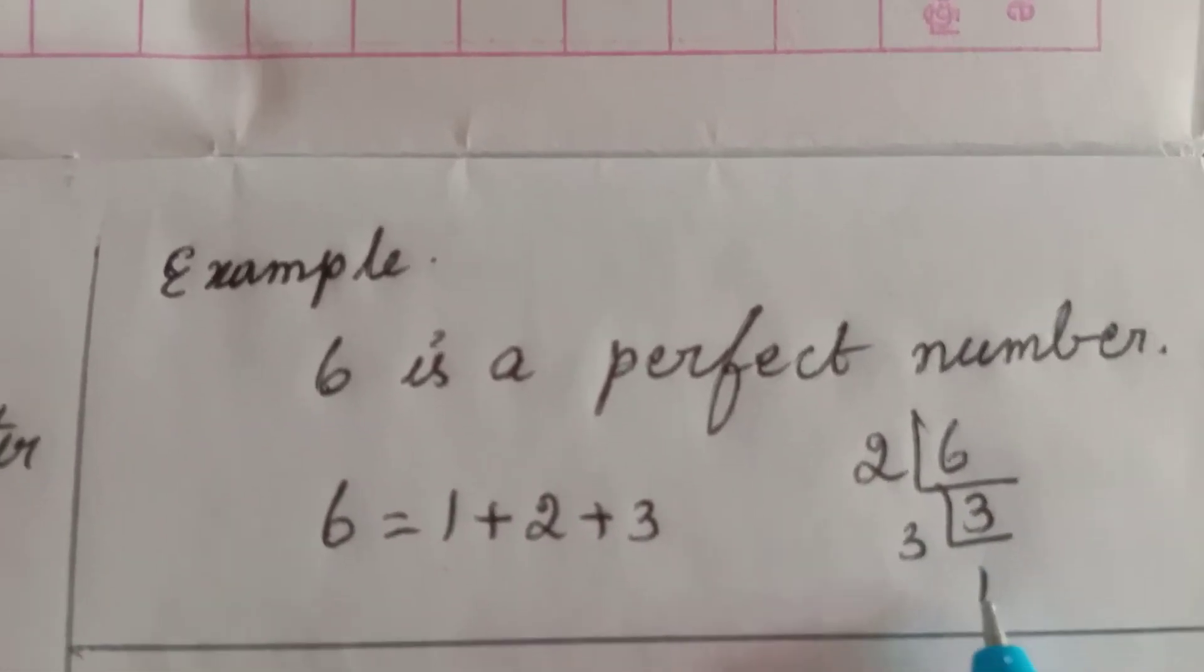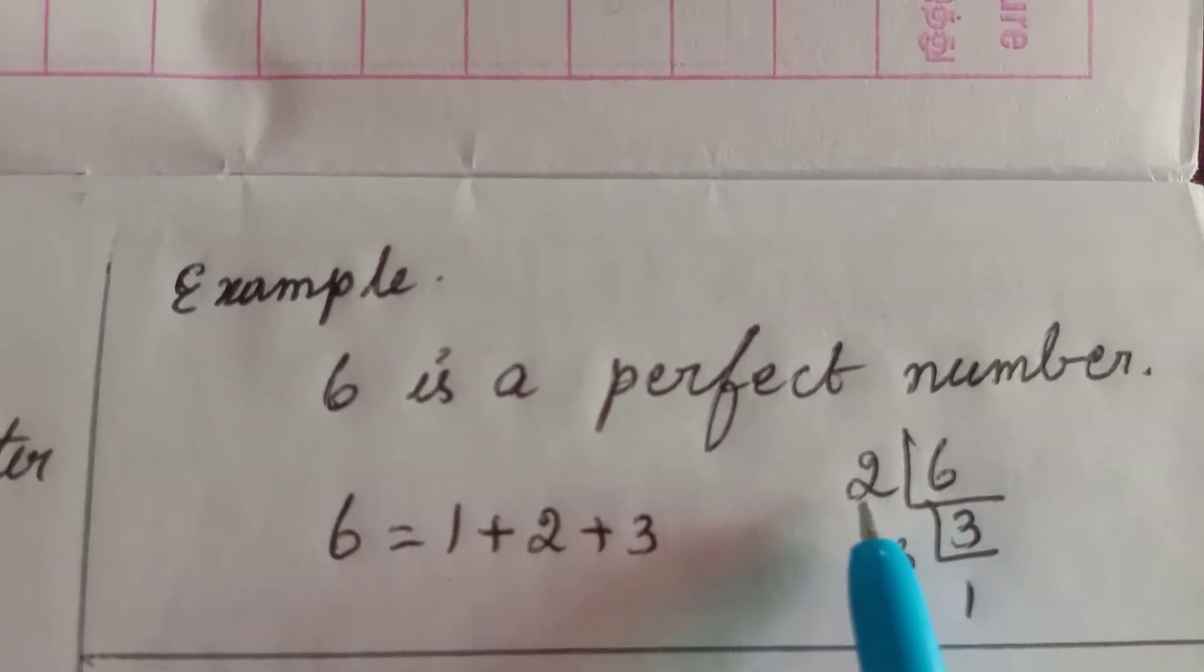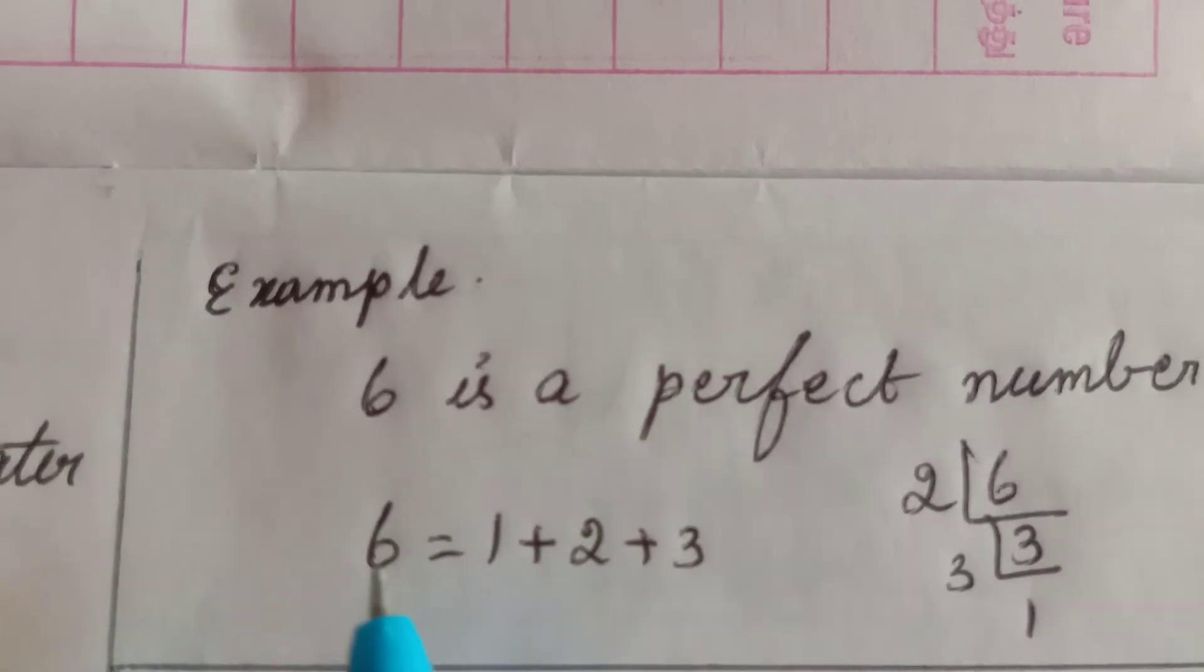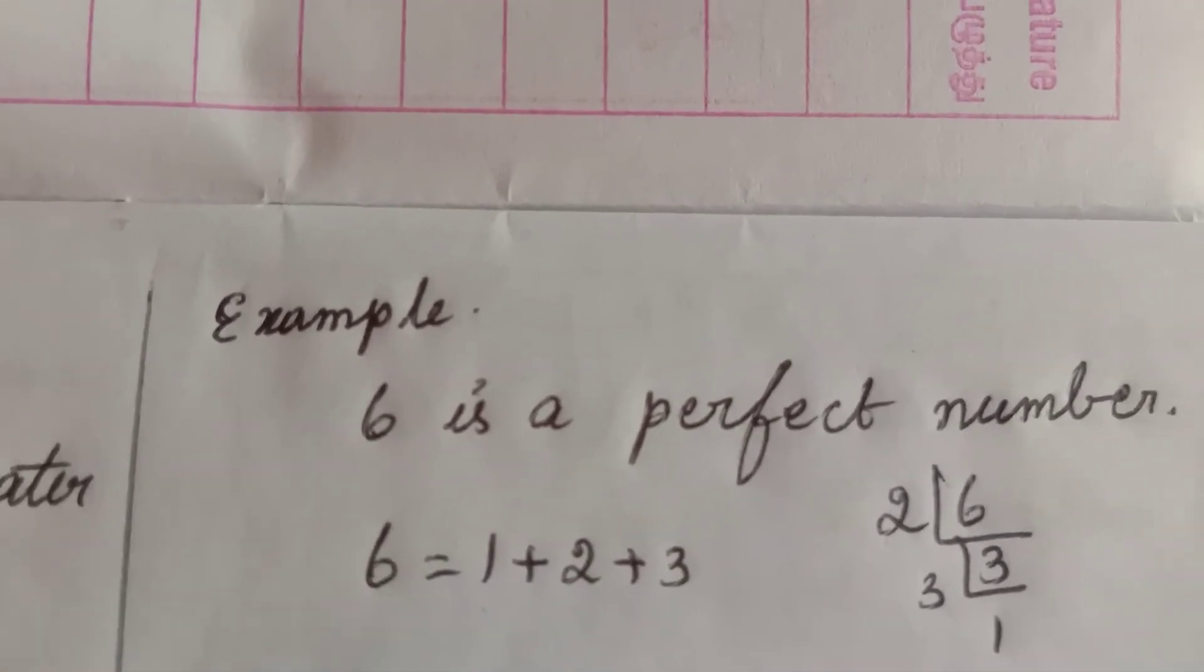So we have to add 1, 3, 2. We get the same 6. So 6 is a perfect number.